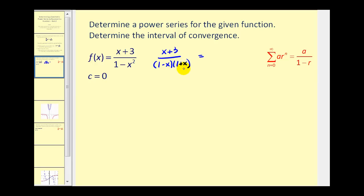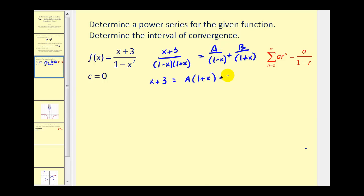We have two linear factors, so we'll have A over one minus x plus B over one plus x. Now we'll multiply both sides of the equation by the common denominator of one minus x times one plus x. So we'll have x plus three on the left must equal A times one plus x plus B times one minus x. Remember, if we multiply this fraction by one minus x times one plus x, the one minus x factors would simplify out, and on this fraction, the one plus x factors would simplify out.